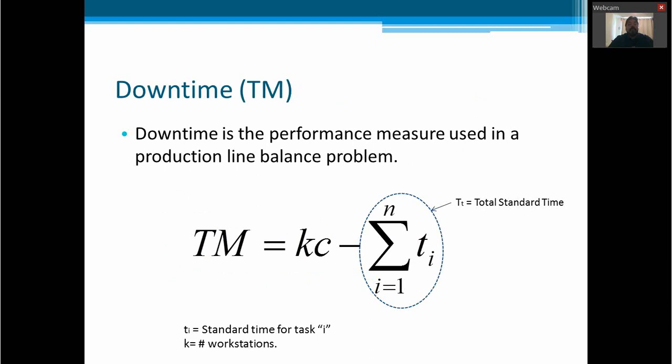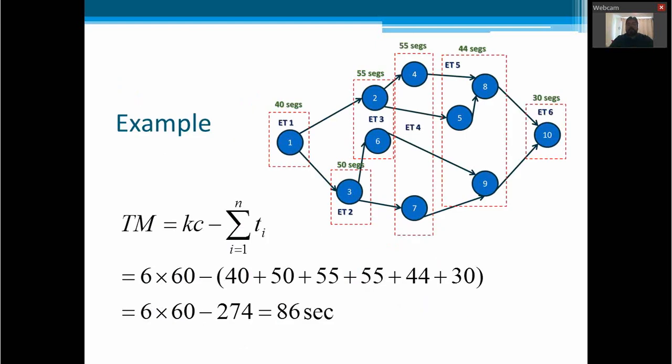We need to consider the concept of downtime, which is the performance measure used in a production line balance problem. For example, the downtime is equal to the number of workstations multiplied by the cycle time, minus the adding of all the individual times of each task. For this example, where we have six workstations, we can end having a cycle time of 60 seconds, we have a downtime of 86. If we multiply the six workstations by times the cycle time, that is 60 seconds, and we minus the total time of every workstation, this will give us a downtime of 86 seconds.